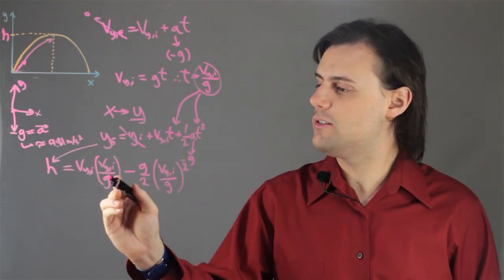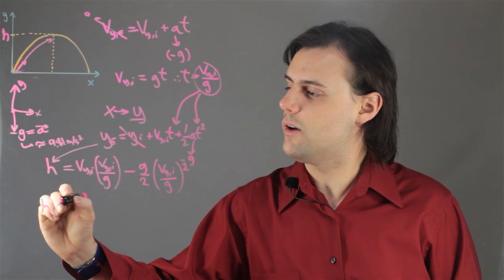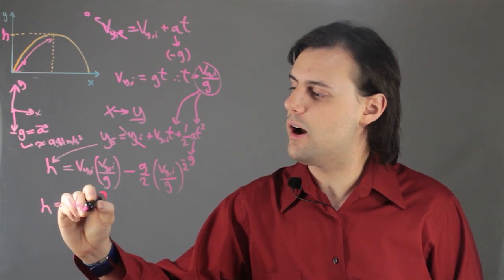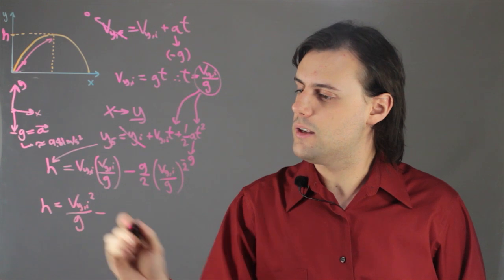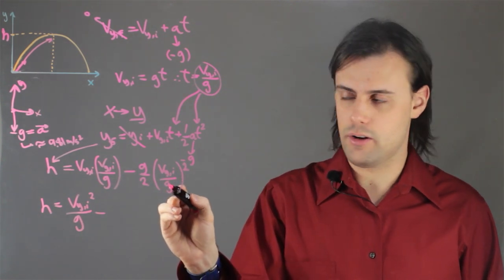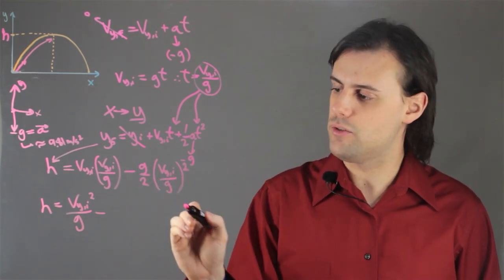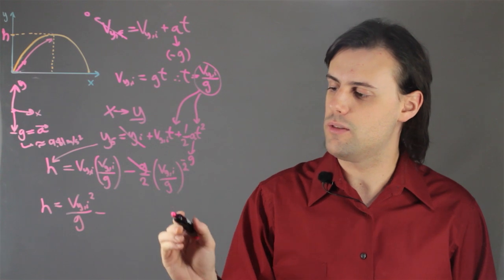So I see that my final height is going to be v_y i squared over g minus... Now, because the g is squared in the denominator, one of those g's cancels out with one of these g's.